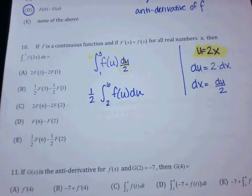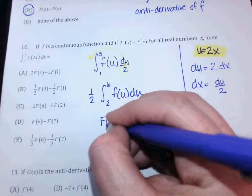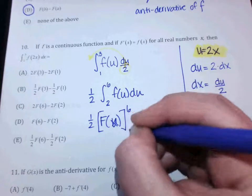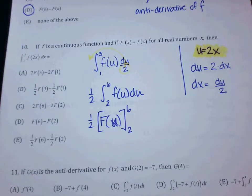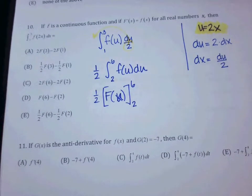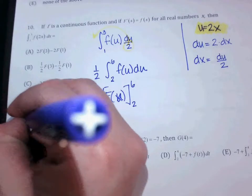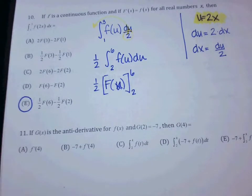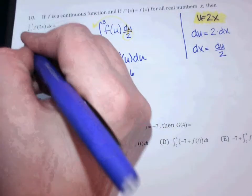Then from there, what is the antiderivative of little f called? Capital F. So it's one half times capital F of U, evaluated from 2 to 6 — plug in 6 and 2 and subtract. Look at your answers — which one says that? E is correct. Very good. And then your obvious ones to cross out would be all the ones that have 2s in the front, because if you have a 2, you know you're going to end up pulling out a half.